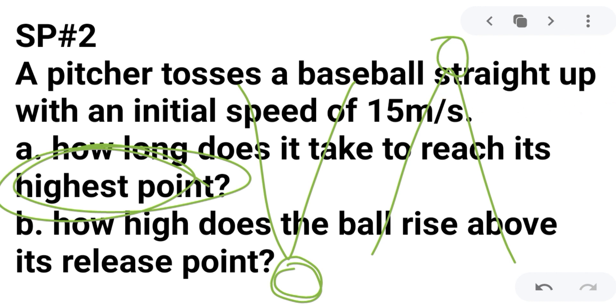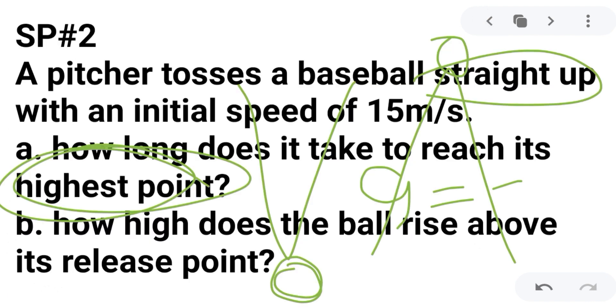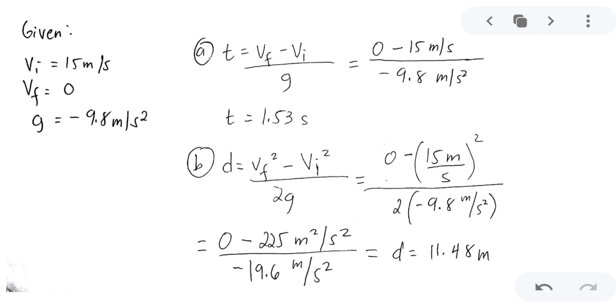So pataas to ha. Pataas yung tapon. So ang magiging value ng acceleration due to gravity mo rito ay negative. So yes, you have here the negative value because it was tossed upward or tinapon pataas yung baseball. Now let us answer problem A. How long does it take to reach its highest point? This is the formula that you will be using.